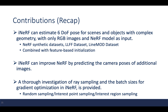To recap the key contributions: iNeRF can estimate the 6-degree-of-freedom pose for scenes and objects with complex geometry using only RGB images and a NeRF model. It can improve NeRF by predicting camera poses of additional images without pose labels. Finally, a thorough investigation of ray sampling and batch size is provided. Thank you all, that's my presentation.